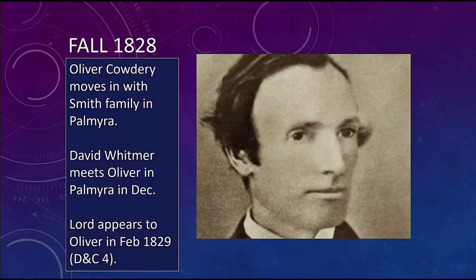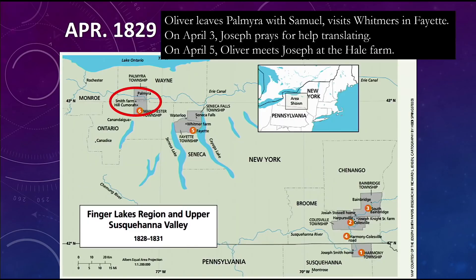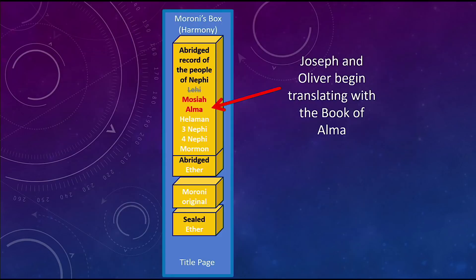Oliver Cowdery was up in Palmyra teaching and hearing about Joseph Smith, asking questions. Finally the Lord appeared to him and said he needed to go help. Oliver Cowdery left with Samuel Smith and came down to Harmony. On April 3rd, Joseph was praying for help to translate because Emma had other things to do. On the 5th, Oliver met Joseph Smith for the first time in Harmony. Then Joseph and Oliver began translating with the Book of Alma, because they'd already done Mosiah.